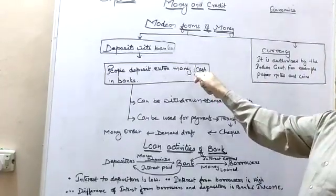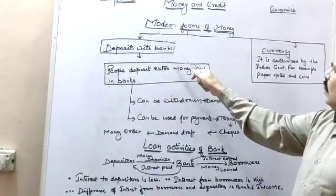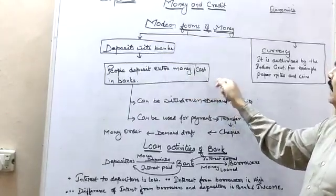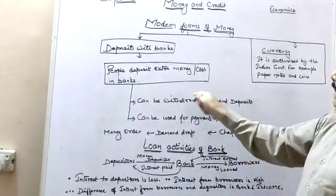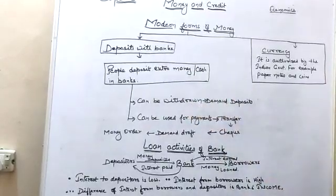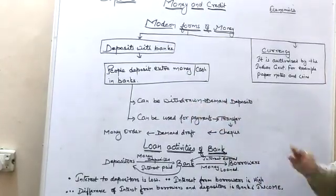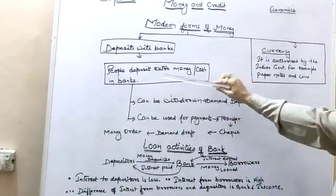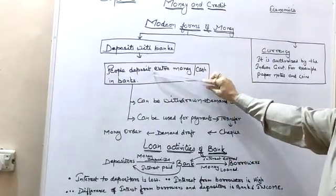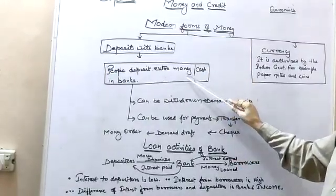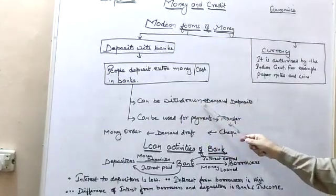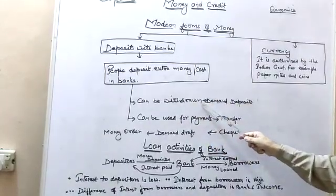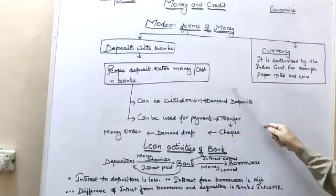On the other side, we deposit money in banks. People deposit extra money in the bank in the form of cash, and this money can be withdrawn. This is called demand deposit.